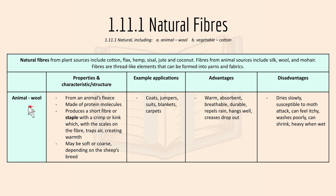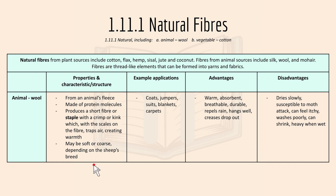The first animal fiber is wool. For properties and characteristics: it's from an animal's fleece and is made of protein molecules. It produces a short fiber or staple with a crimp or kink, and the scales on the fiber trap air creating warmth. Wool may be soft or coarse depending on the sheep's breed. Examples include coats, jumpers, suits.